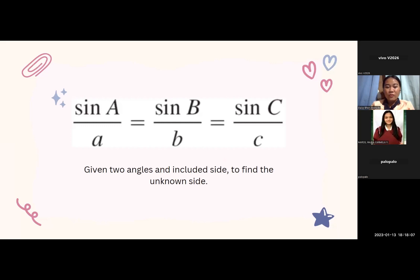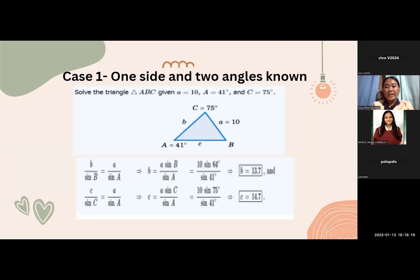So, sine A over a is equal to sine B over b is equal to sine C over c. Given two angles and included side to find the unknown side. Case 1. One side and two angles is known. Triangle ABC given a is equal to 10 where angle A is equal to 41 degrees and angle C is equal to 75.